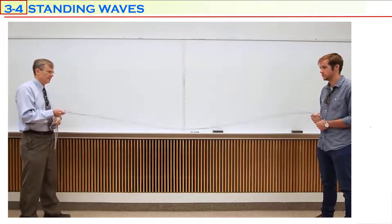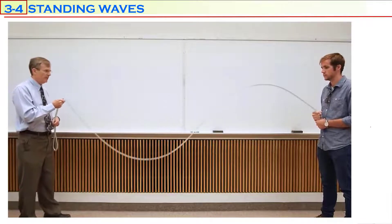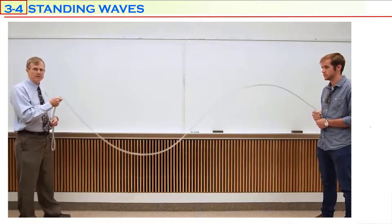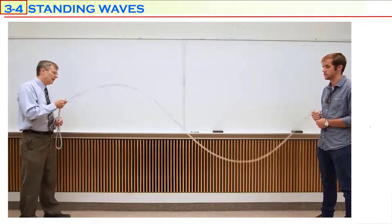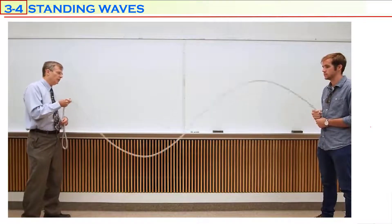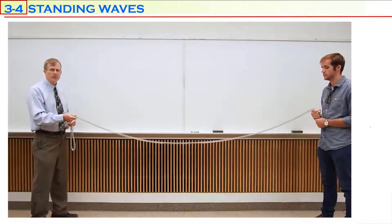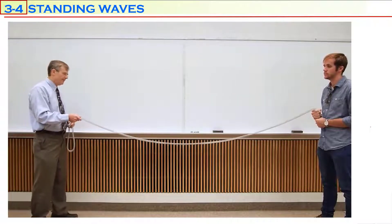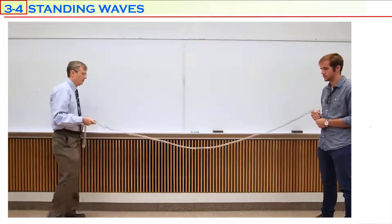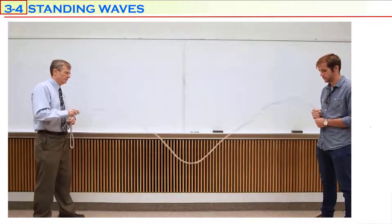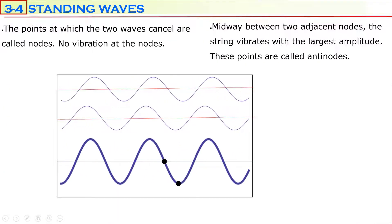If I double the frequency of the fundamental mode, we get the second order standing wave — the second harmonic, sometimes called the first overtone. This one is going twice as fast as the fundamental mode, so its frequency is twice that of the first order standing wave. There's a node where there is approximately no motion. Now I'm going to triple the frequency to get the third harmonic, or second overtone — the third order standing wave.